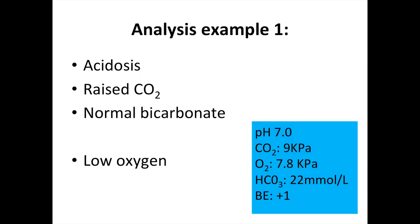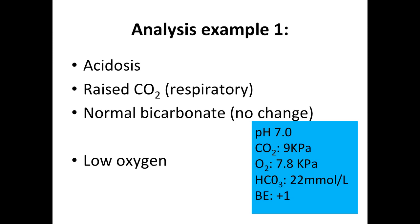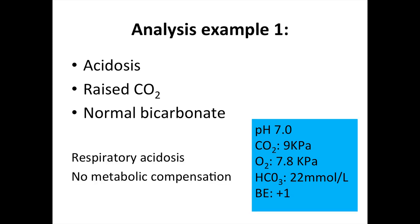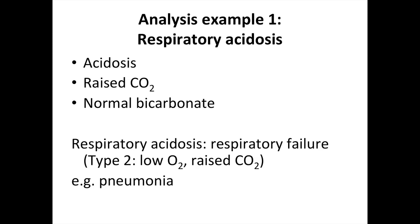Looking at example 1: the pH is acidotic, there is a raised carbon dioxide, but a normal bicarbonate, with a low oxygen. The raised carbon dioxide is in line with the acidotic pH, so the change is respiratory in nature, and there doesn't appear to be any metabolic compensation. So example 1 is a respiratory acidosis with no metabolic compensation. This could be due to respiratory failure, such as pneumonia.